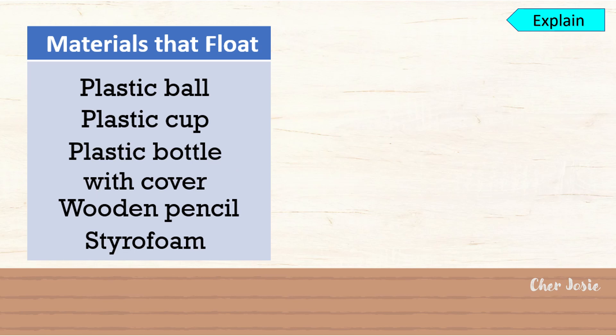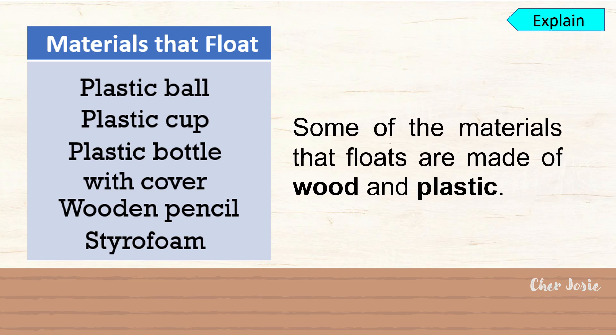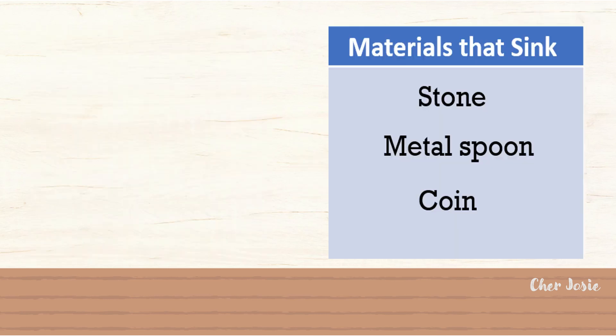Based on our activity, plastic ball, plastic cup, plastic bottle with cover, wooden pencil, and styrofoam are examples of materials that float. Some of these materials are made of wood and plastic, that's why they float. Materials that sink are stone, metal spoon, and coin — these materials are made up of metal or stone.